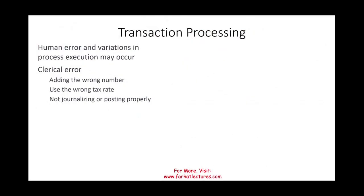For transaction processing, a manual system is always subject to human errors and variation in process execution — journalizing entries, posting to the ledger, adding receipts, and so forth. Errors include using the wrong tax rate, journalizing but not posting, or not carrying entries through to the financial statements. It's always prone to some sort of clerical error.